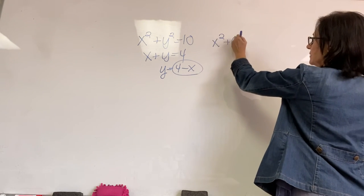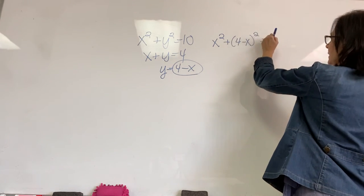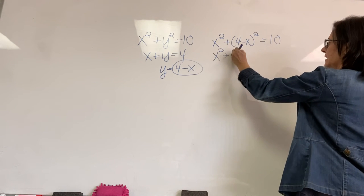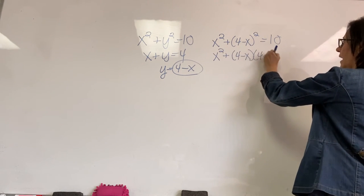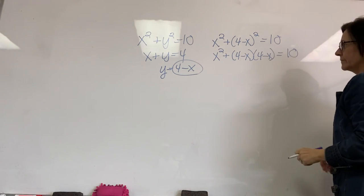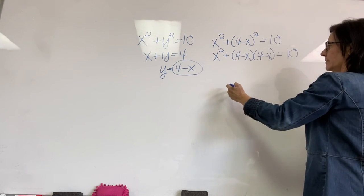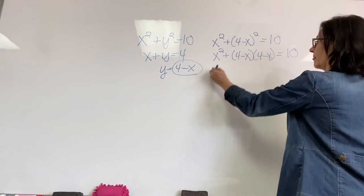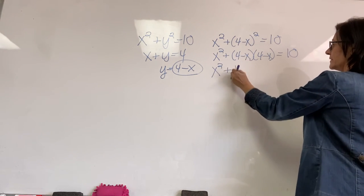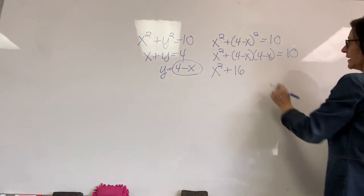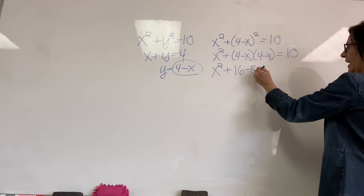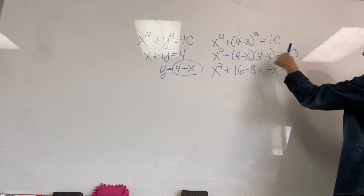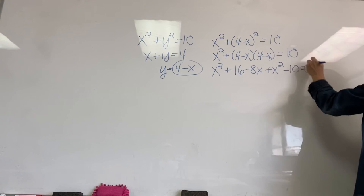So, I have x squared plus 4 minus x squared equals 10. That's x squared plus 4 minus x times 4 minus x equals 10. We'll FOIL this, but we'll do it in three steps because our outers plus our inners is going to be my middle term. All right. 4 times 4. That's 16. That's negative 4x and another negative 4x gives me negative 8x. And negative x times negative x is positive x squared.